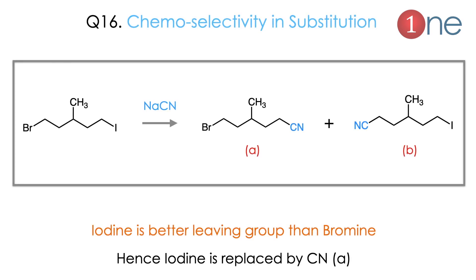Next: chemoselectivity in substitution. The starting material contains both bromine and iodine; the nucleophile is NaCN. Two products are possible — CN can replace iodine or CN can replace bromine. The better leaving group decides the reaction. Iodine is the better leaving group because of its lower basicity. So iodine is replaced by CN. The reaction is decided by the leaving group, not by the nucleophile.